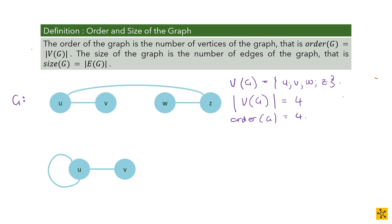The size of a graph is the number of edges, denoted |E(G)|. The size represents the number of relationships in the graph. For example, if graph G has three edges, the size of G is 3. For graph H with vertices set {U, V} and edge set {(U,V), (U,U)}, the order is 2 and the size is 2. Be consistent with your graph labels — don't mix up G and H.